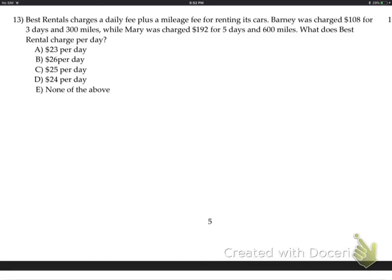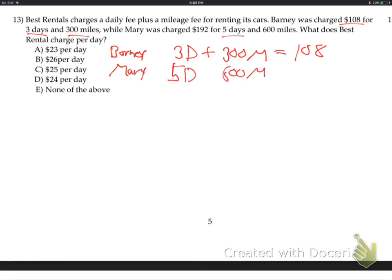So number 13, this rental thing. So for Barney, first off, 3 days and 300 miles of his rental car came out for a charge of 108. Got to put the charges on the right, the money on the right. Whereas Mary, 5 days, 600 miles, came out a total of 192 was her charge. So basically it's two equations, two letters like that.